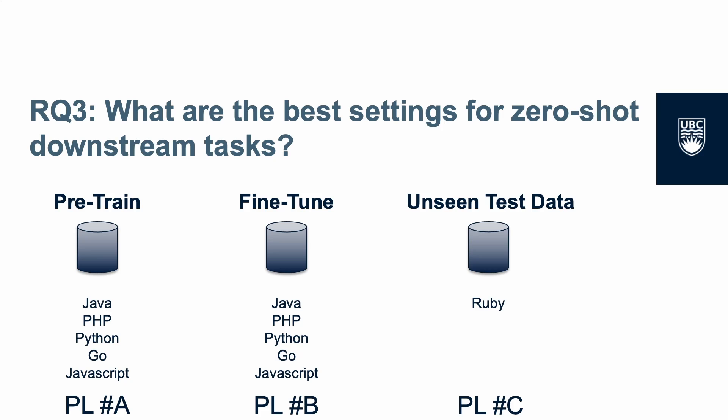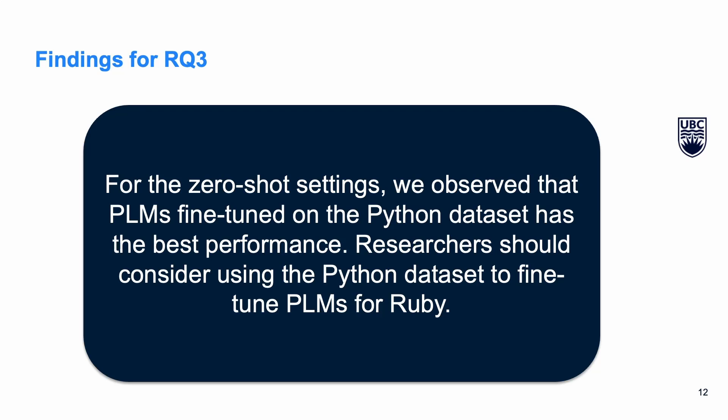In RQ3, we are interested in understanding the best settings for zero-shot downstream tasks. For example, if we fine-tune a PLM pre-trained with language A on language B and test it on language C, we examine whether this yields better performance over a PLM pre-trained and fine-tuned using the same target language. We observe that for zero-shot settings, PLMs fine-tuned on the Python dataset have the best performance, and researchers should consider using the Python dataset to fine-tune PLMs for Ruby.